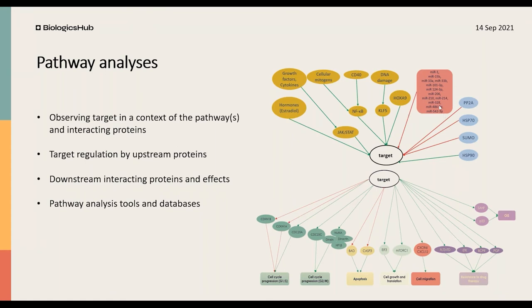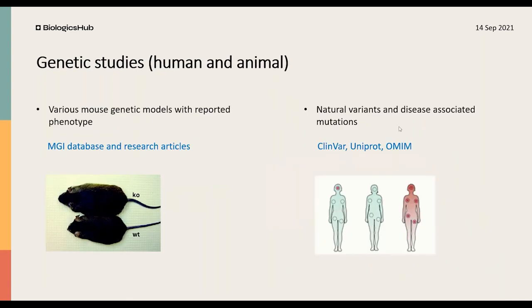The first insight into the effect of target modulation comes from genetic studies in both humans and animals — including mouse genetic studies and human mutation and variant analysis. In mice, we analyze the phenotype of complete or conditional target deletion or downregulation, and also activation and stabilization. However, significant extrapolation is needed from complete deletion in the mouse to partial or transient inhibition in humans. Human natural variants and mutations are an even more valuable source of information, since they more closely resemble target inhibition in humans — especially variants of clinical significance with described phenotypic information.